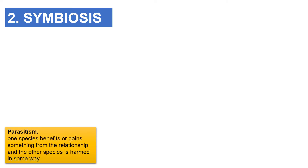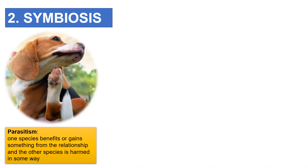Symbiosis describes the way in which two different species living together in the same community interact with each other over a long time period. This can occur in the form of parasitism, mutualism, or commensalism. In parasitism, one species benefits or gains something from the relationship and the other species is harmed in some way. The host may die in some interactions. Ticks are parasites and feed off the blood of many animals, for example dogs, cows, bats, and humans.